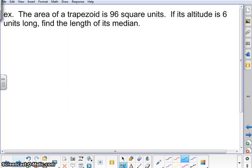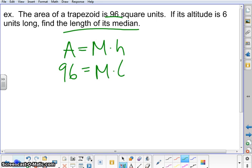Okay, next one. Again, push pause, see if you can solve this one. And since we are trying to find the median, it makes sense to use the median formula. So we have area, which we know is 96. The altitude is 6, and if we divide both by 6, we're going to get 16 units for the median.